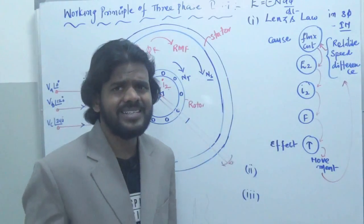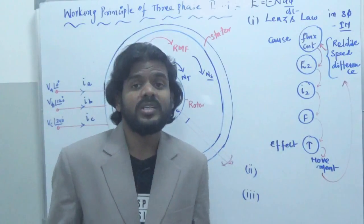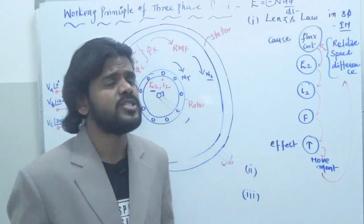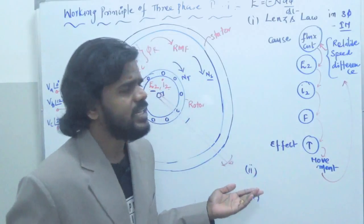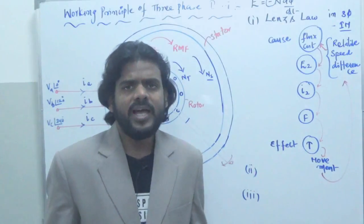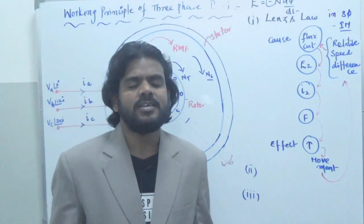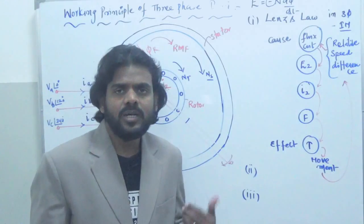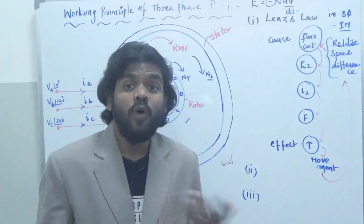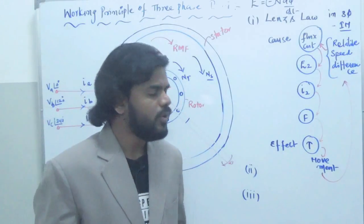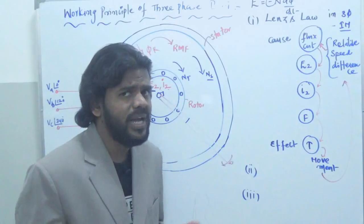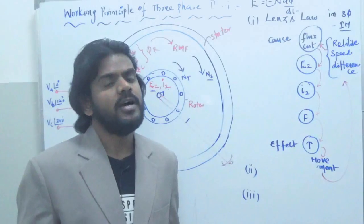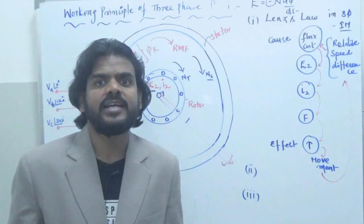The first point is Lenz's law — why the rotor runs along with the direction of the RMF. The second point is what happens if the rotor runs at synchronous speed. And the third point, which I'm covering now, is about why the induction motor cannot achieve or catch the speed of the RMF — why it always slips behind the RMF.